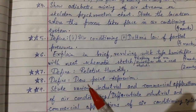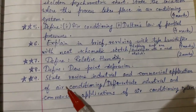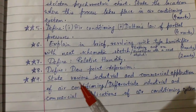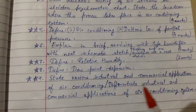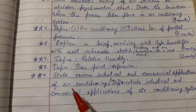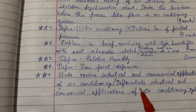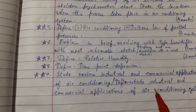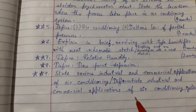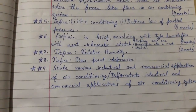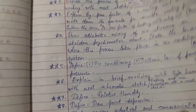Question number 7: Define relative humidity. Question number 8: Define dew point depression. Question number 9: State various industrial and commercial applications of air conditioning, or it may be asked as: differentiate between industrial and commercial applications of air conditioning systems. This concludes Chapter 4.